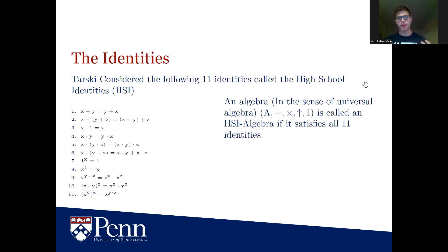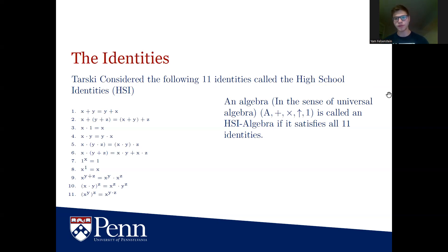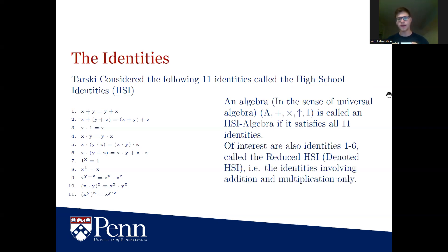So what does this mean? Basically, A is some set, some collection of elements, and plus, times, and exponentiation are all operations defined on it. A priori we don't require anything from these operations, but if we want it to be a HSI algebra we require them to satisfy all 11 identities. We also have a distinguished element 1, which acts as the multiplicative identity. The identities 1 to 6 — those involving only addition and multiplication — we call the reduced high school identities, denoted with a bar.